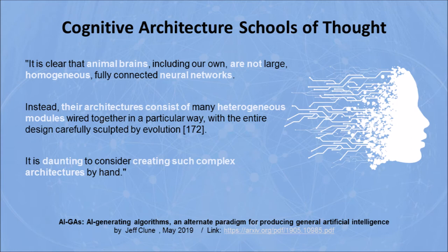In contrast, Jeff Clune in a paper published this year wrote, it is clear that animal brains including our own are not large homogeneous fully connected neural networks. Instead,